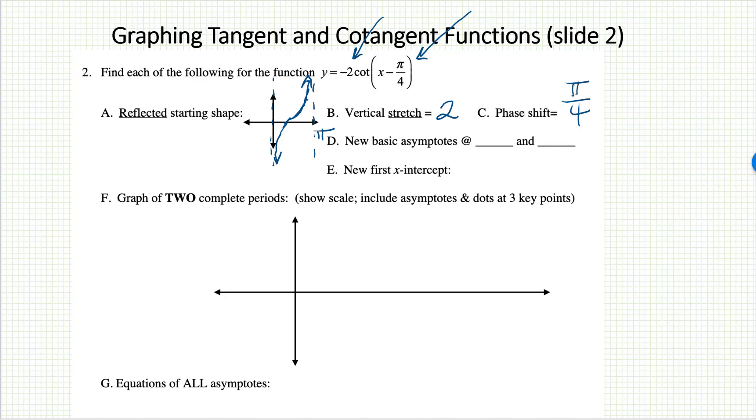Where will my new asymptotes be? In this particular one, the period is not changing. There's no multiplying number in front of the x, so the period is still staying at pi. Why would the asymptotes even change then? Only because of the phase shift. So nothing needs to be stretched horizontally, but every single point on this graph is going to move pi over 4 to the right. So the asymptote that used to be at 0 is now going to be at pi over 4.